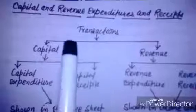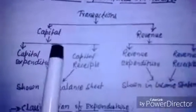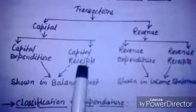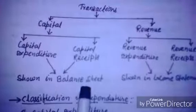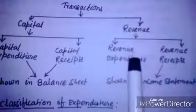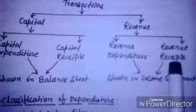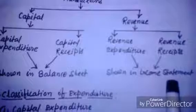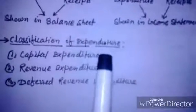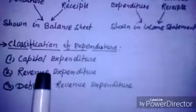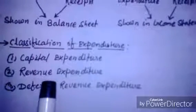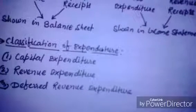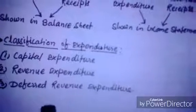Transactions are divided into two natures: capital and revenue. Capital nature is divided into capital expenditure and capital receipts — both shown in balance sheets. Revenue is also divided into revenue expenditures and revenue receipts — both shown in income statements. There are three types of expenditure classifications: first, capital expenditures; second, revenue expenditures; and third, deferred revenue expenditures.